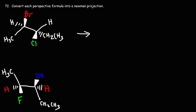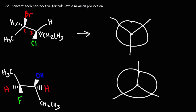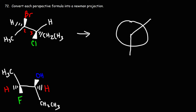Let's draw the Newman projection along the C2-C3 bond. So on carbon 2, this group is going down. I'm going to draw this form of the Newman projection. Here's the methyl group — it's going down and hydrogen is going up. Hydrogen is on carbon 3, so it's anti with respect to it.